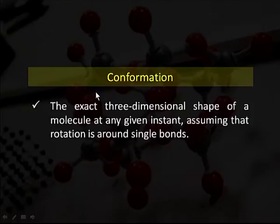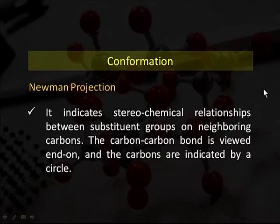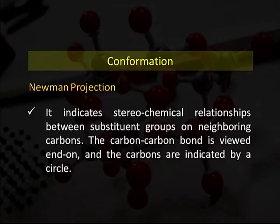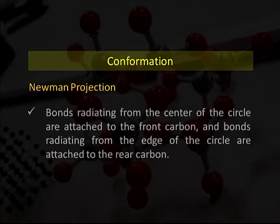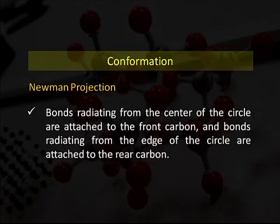A conformation is the exact three-dimensional shape of a molecule at any given instant, assuming rotation around a single bond. In a Newman projection, the carbon-carbon bond is viewed end-on and the carbons are linked by a circle. Bonds radiating from the center of the circle are attached to the front carbon, and bonds radiating from the edge of the circle are attached to the rear carbon. It indicates stereochemical relationships between substituent groups on neighboring carbons.